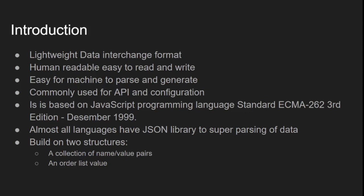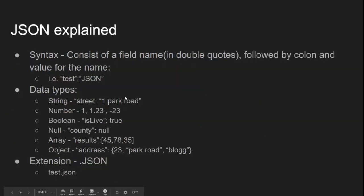So what is JSON syntax? It has a field name in double quotes, followed by a colon, and then the value for that name. In my example, the name of the field is 'test' and the value is 'JSON'. That's the exact syntax you need.